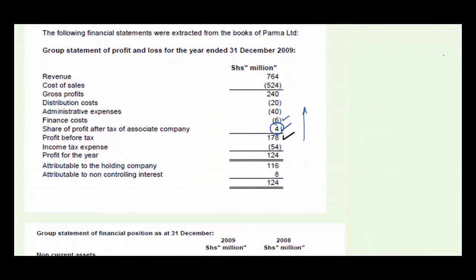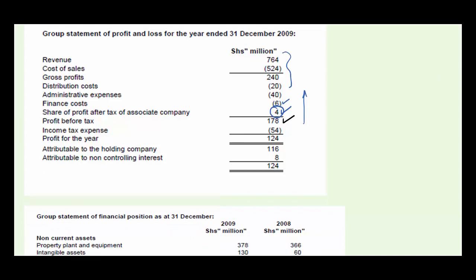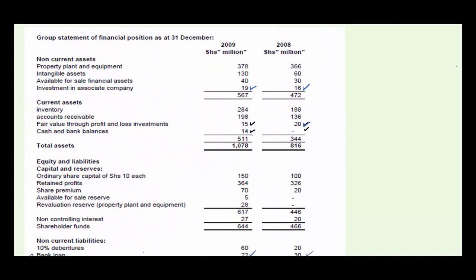Back to the P&L — no other non-cash items. We assume all remaining items are cash in nature unless told otherwise. We now look at the statement of financial position on a line-by-line basis. As is standard practice, we leave PPE for last because it usually has many complications. We start with intangible assets.